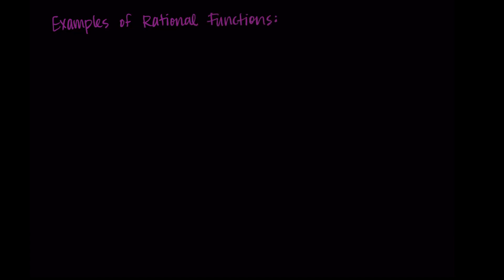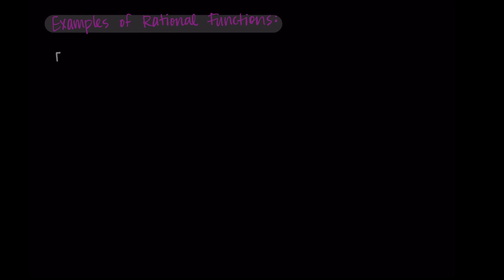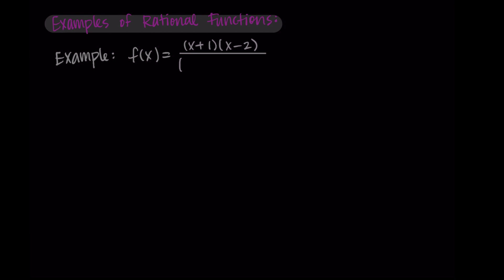Hi, and welcome back. In this video, we're going to work through two examples of finding a bunch of information about a rational function. So let's try this out on our function f of x, which is equal to x plus 1 times x minus 2, divided by x minus 2 times x plus 3 times x minus 5.